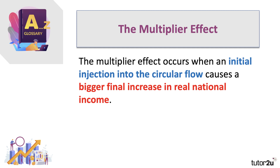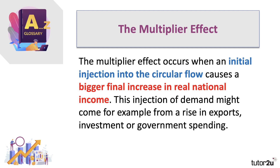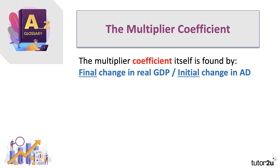This injection of demand might come, for example, from a surge in export sales — goods and services leaving the economy but money coming into the circular flow — or from capital investment spending by businesses, or from government spending. There is something called the multiplier coefficient, which is just a number.